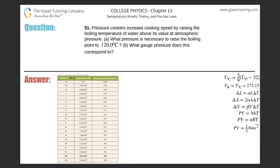Number 51. Pressure cookers increase cooking speed by raising the boiling temperature of water above its value at atmospheric pressure. Letter A: what pressure is necessary to raise the boiling point to 120 degrees Celsius?